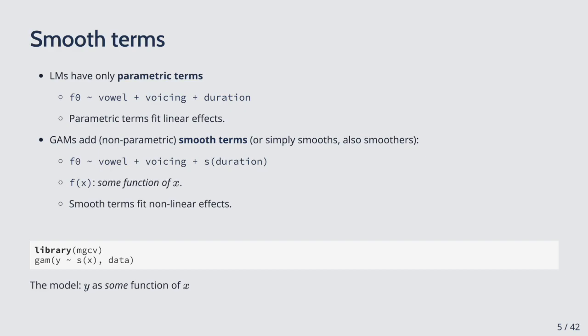Here is a minimal example code in R. GAMs can be fitted in R using the MGCV package. The main function you would use when fitting GAMs is the GAM function, and the syntax is literally the same as for LMEs with the addition of the S terms — the smooth terms. In this case the model states Y as some function of X, where X is expected to have a potentially non-linear effect.